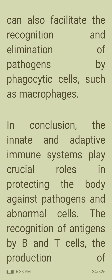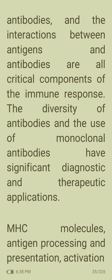The complement system can eliminate pathogens by forming pores in the pathogen's membrane, and antibody binding to antigens also facilitates recognition and elimination of pathogens by phagocytic cells such as macrophages. The innate and adaptive immune systems play crucial roles in protecting the body against pathogens and abnormal cells. The recognition of antigens by B and T cells, production of antibodies, and antigen-antibody interactions are all critical components of the immune system.